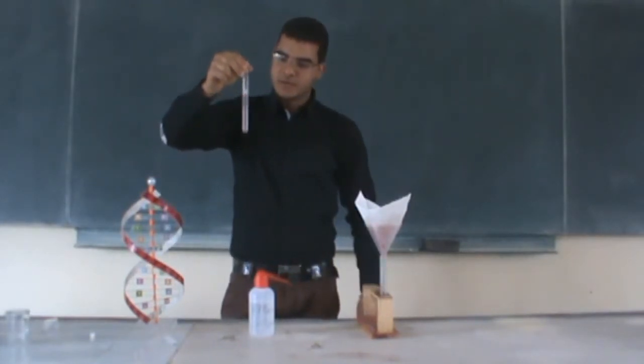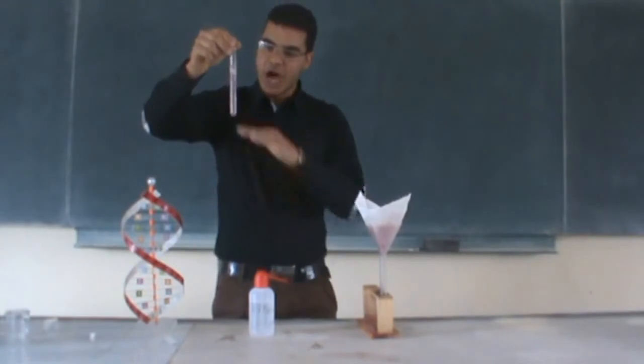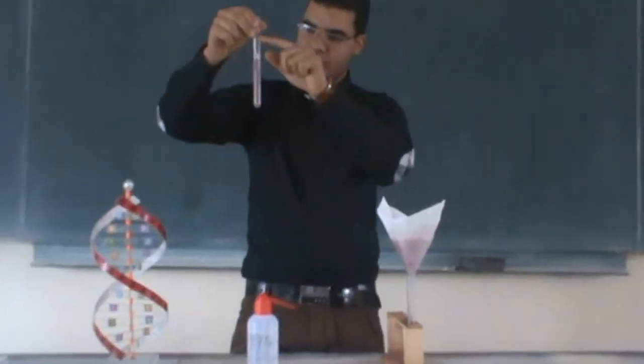As we see now, there is a separation of white stuff in the middle between the alcohol above and the solution of strawberries below. This white stuff is the DNA.